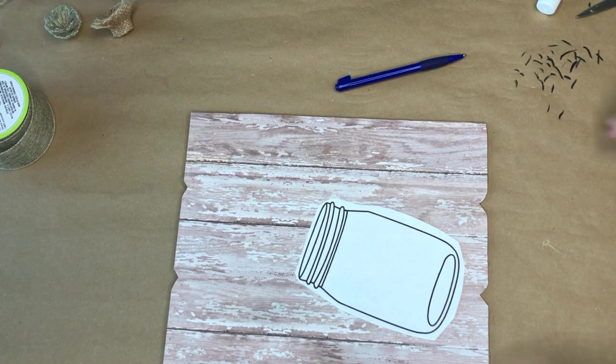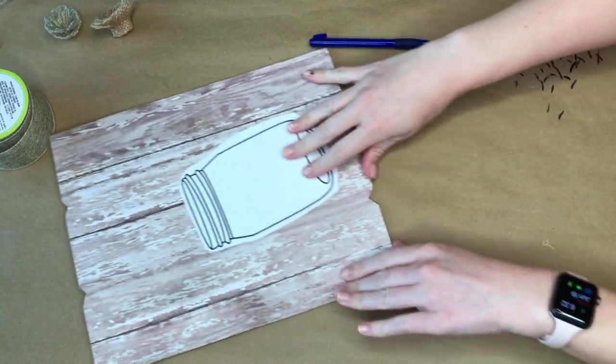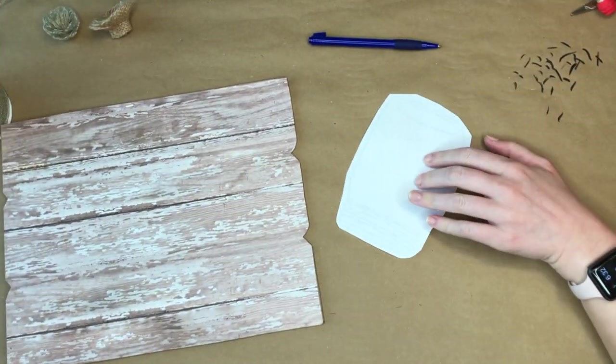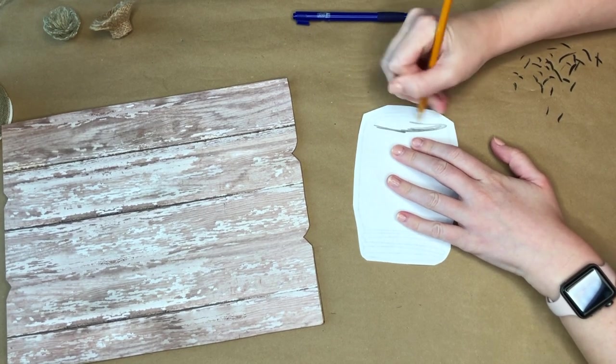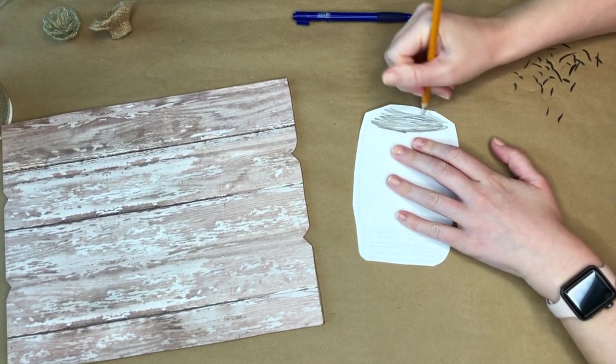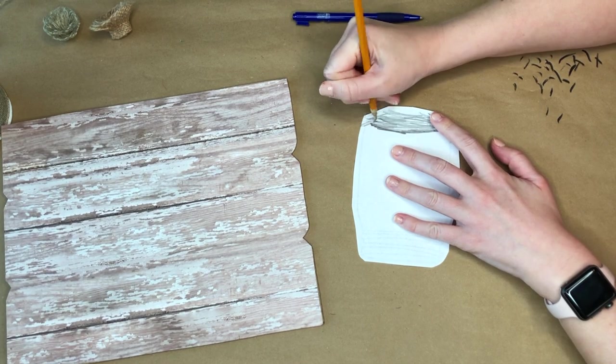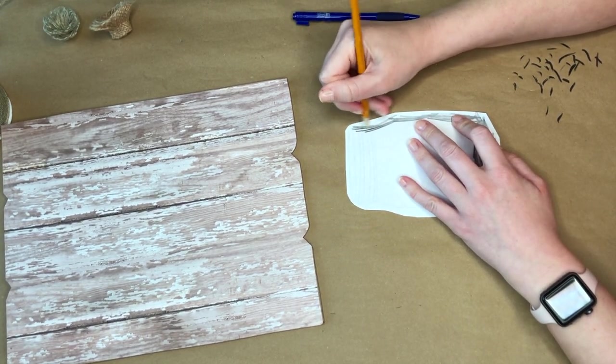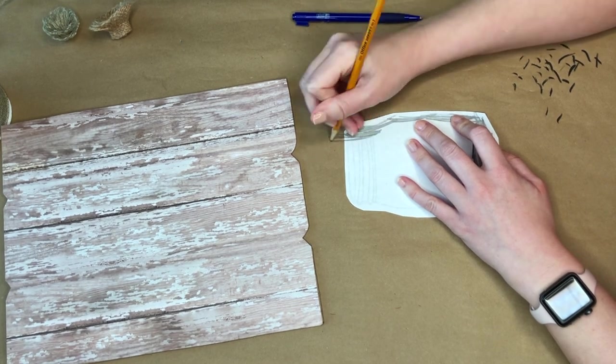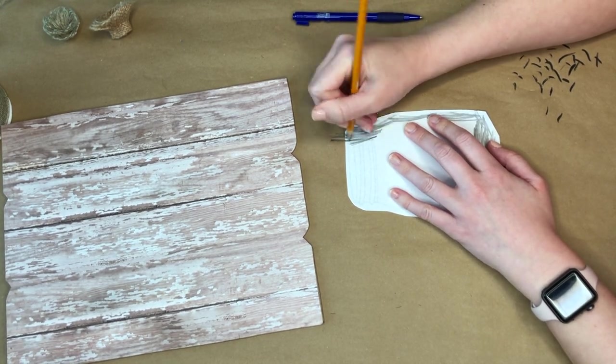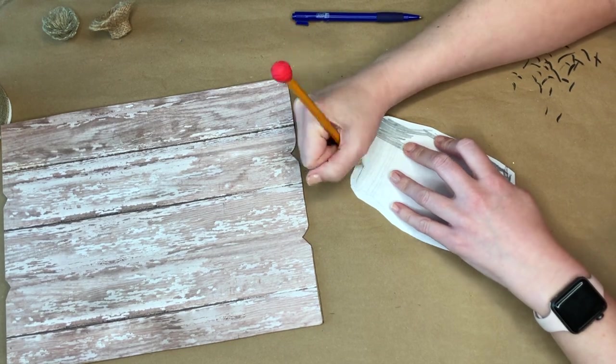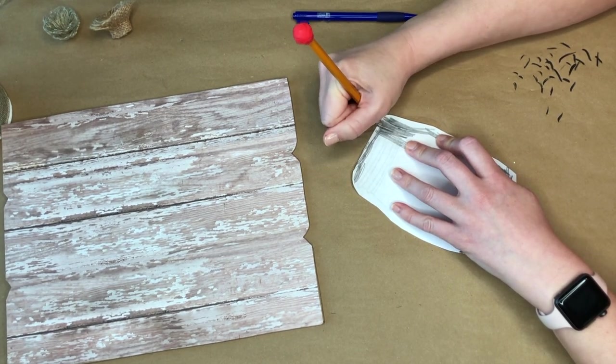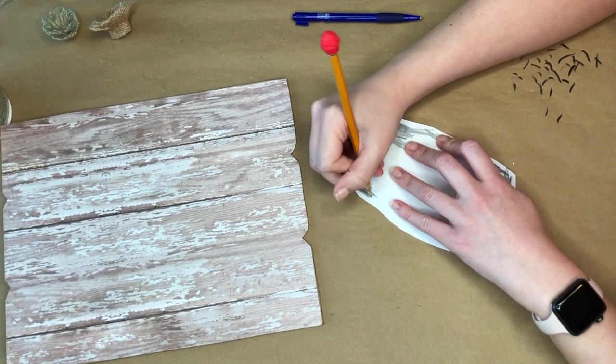If you're good at drawing or sketching, then you can just go ahead and sketch out a mason jar on your sign. I'm not the greatest at drawing. So I just headed over to Google and I just put into Google mason jar image. And this is one that came up. So I printed it out in a size that I thought would fit my sign. And I am going a little bit old school, instead of using a Cricut or any vinyl, I am doing this graphite method.